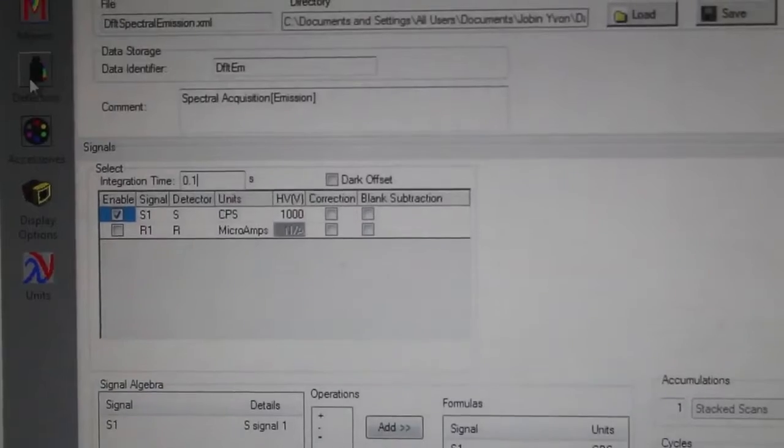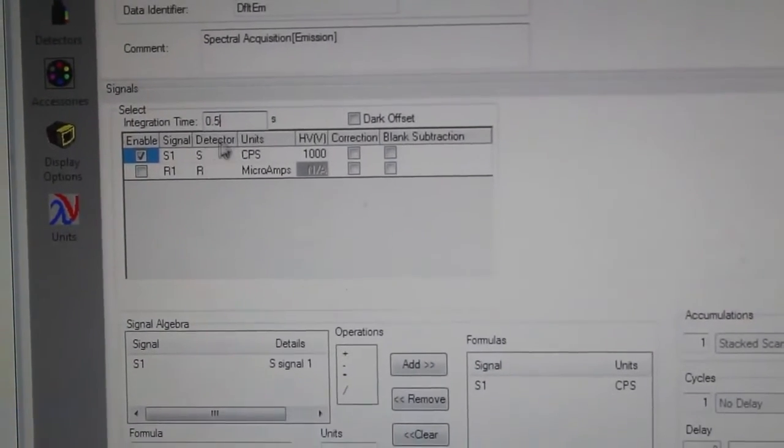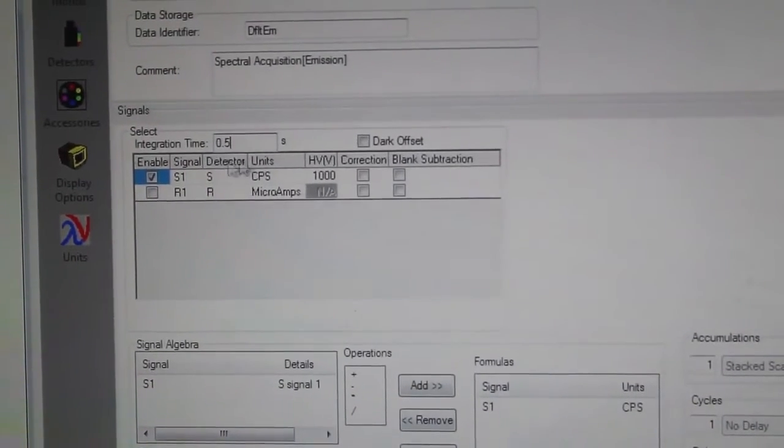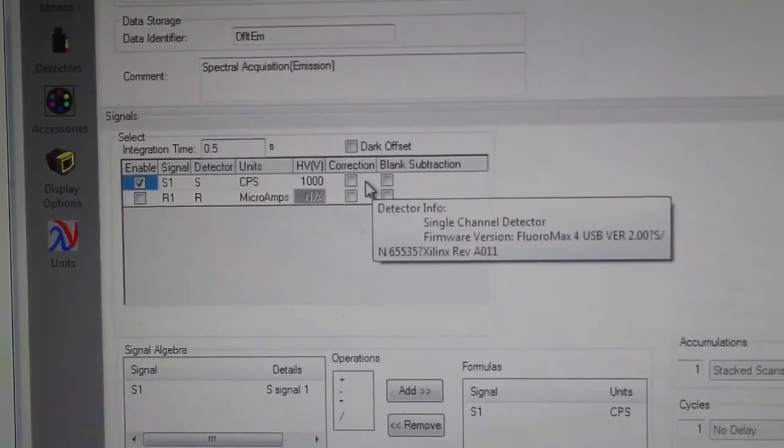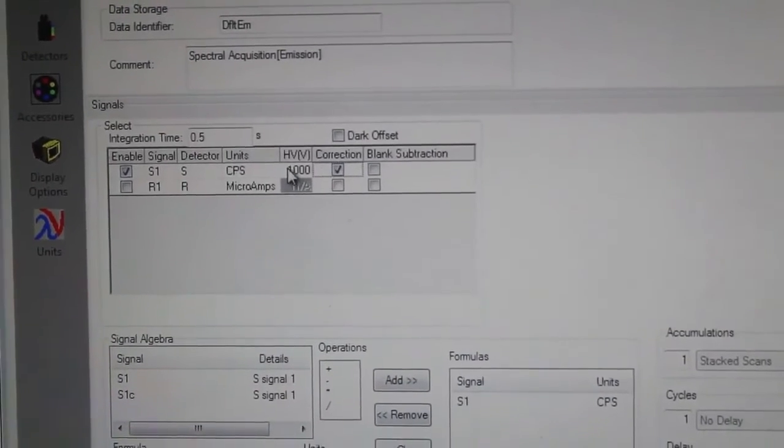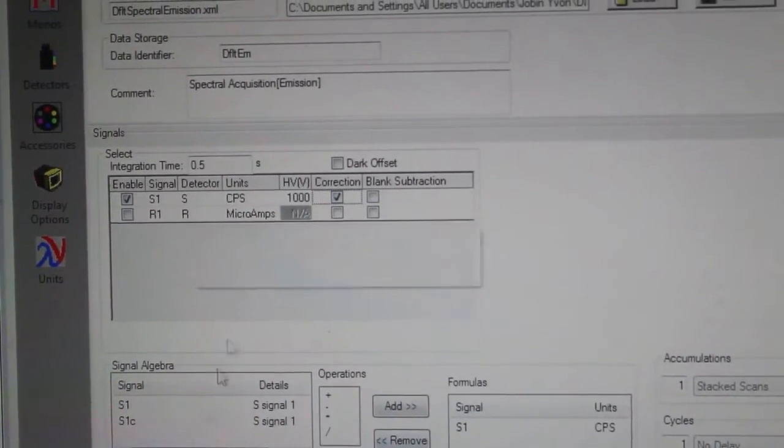Then we go to the detector window and change the integration time to 0.5 seconds. This means at every wavelength it will wait for 0.5 seconds to collect the fluorescence emission. Then we click on this correction window because this will deduct the excitation profile of the light from the emission window.